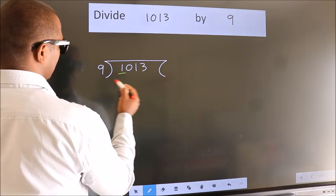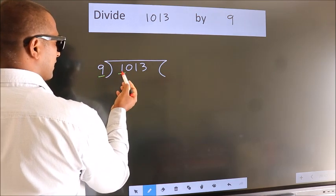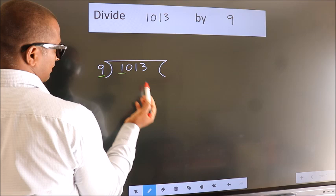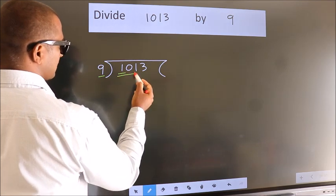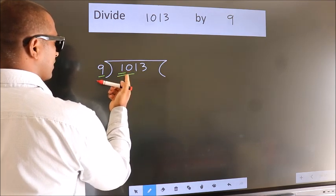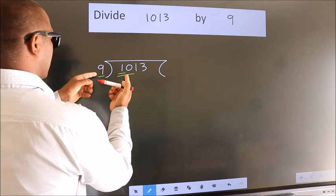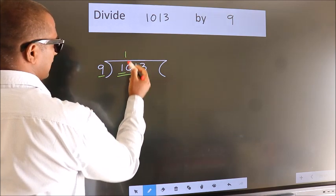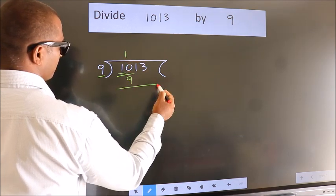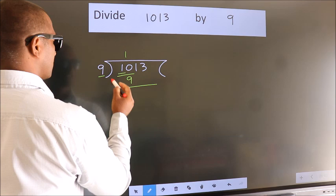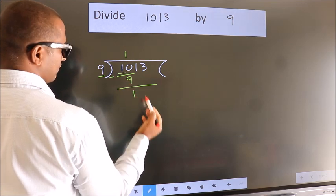Here we have 1. Here 9. 1 is smaller than 9, so we should take two numbers: 10. A number close to 10 in the 9 table is 9 ones, 9. Now we should subtract. We get 1.